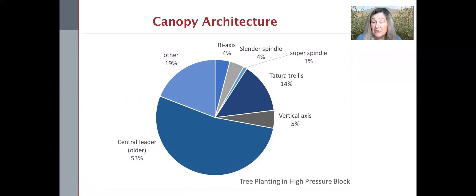In terms of canopy architecture, this response will not come as a surprise to most of the audience. The highest pressure blocks are typically our older plantings,